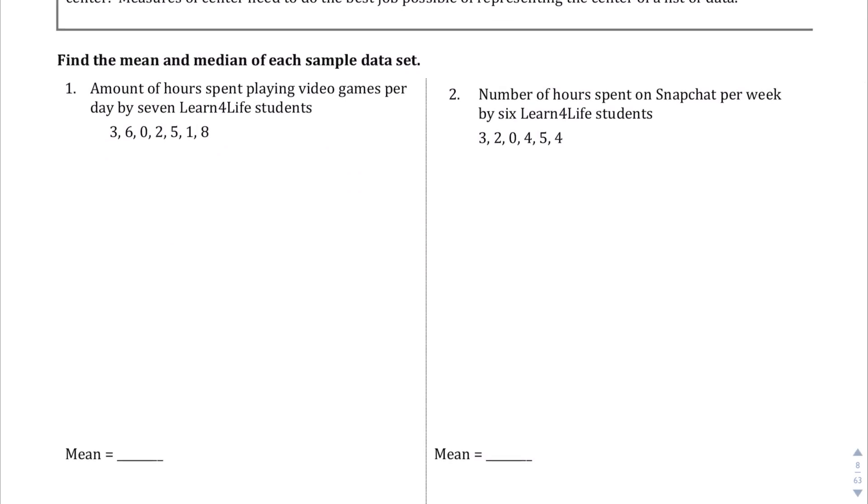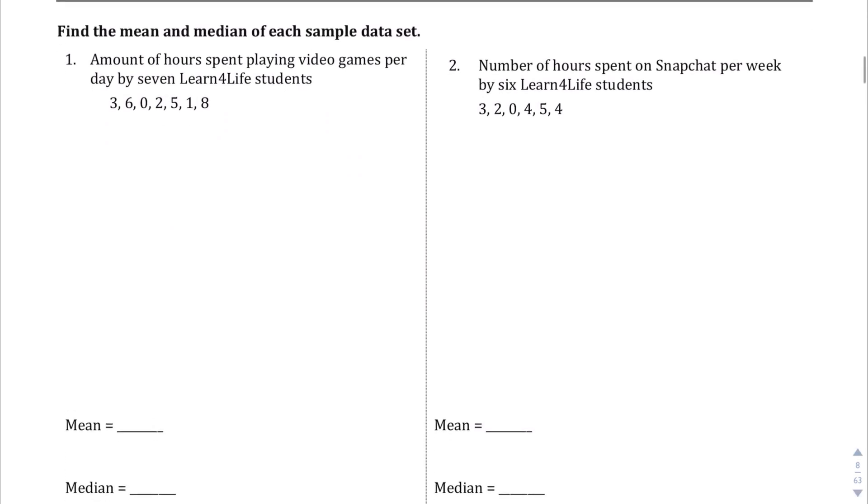So, question 1 says we're trying to find the mean and the median of these numbers. The data set is from the amount of hours spent playing video games per day by seven Learn4Life students. So, the context should tell us there are 7 items we are comparing here. Let's go ahead and just start off by putting these in order.